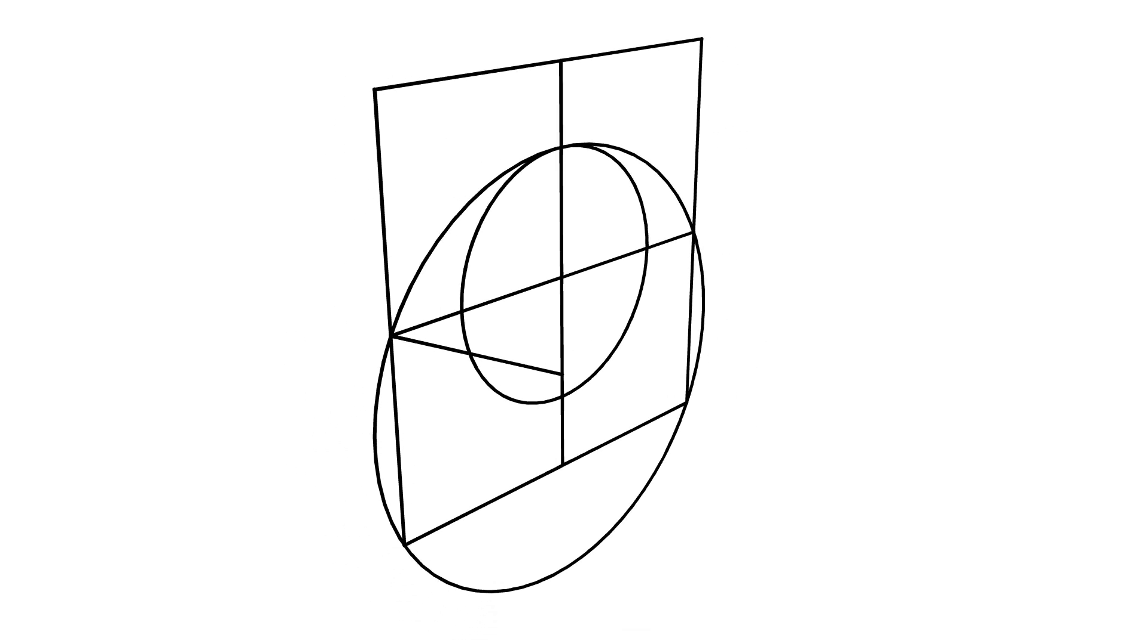We'll construct two lines perpendicular to the square plane intersecting at these two points. And we'll construct a circle that cuts the perpendicular line with a radius equal to A.